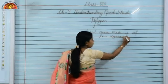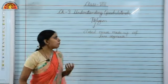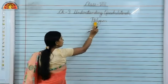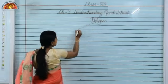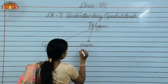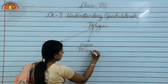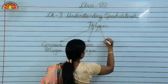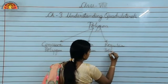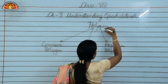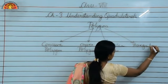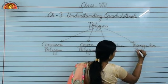Now, there are four types of polygons. The first is a concave polygon, second is a convex polygon, third is a regular polygon, and the last one is the irregular polygon.